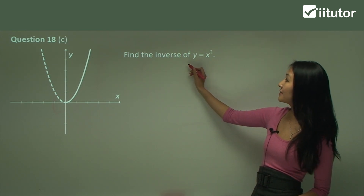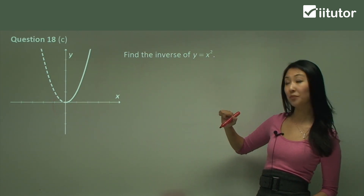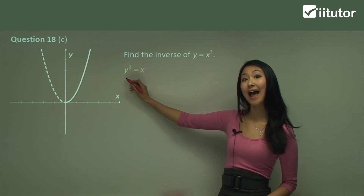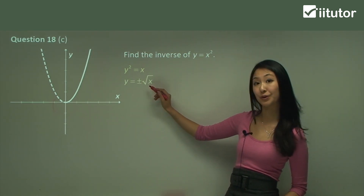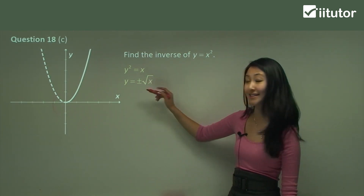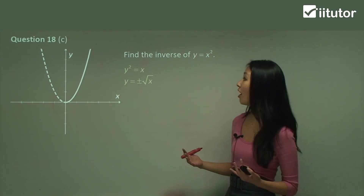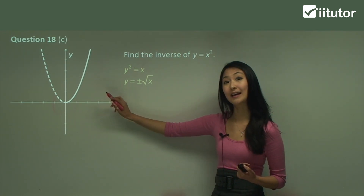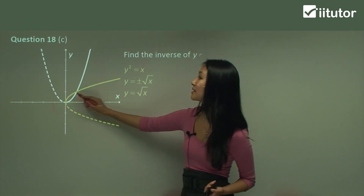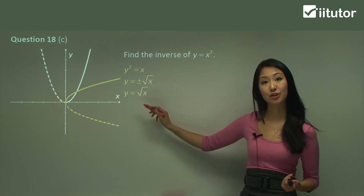Now let's find the inverse of y equals x squared. Switching x and y, we have x equals y squared. To get rid of that squared we just need to square root both sides, and remember when we square root we always have plus and minus. Because the question specifies we only want this curve for when it's monotonic increasing, we must only draw the positive portion of the inverse.